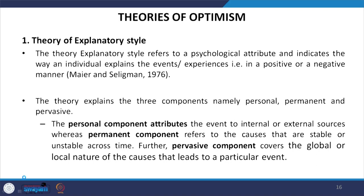Now we will look at certain theories of optimism. The first theory is the Explanatory Style theory, which refers to a psychological attribute indicating the way an individual explains events or experiences — in a positive or negative manner.